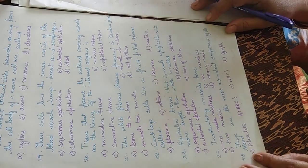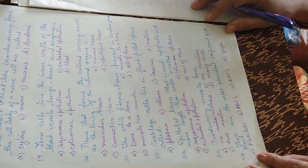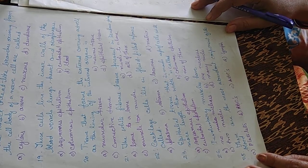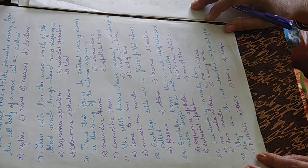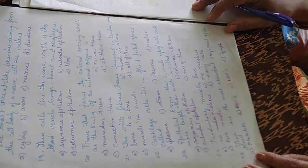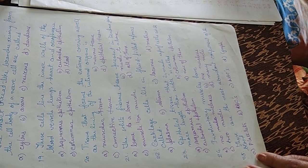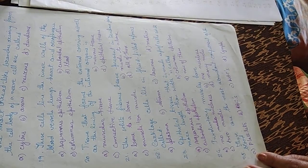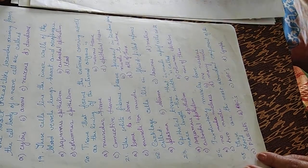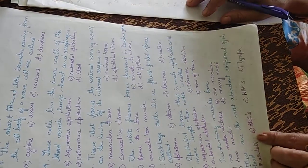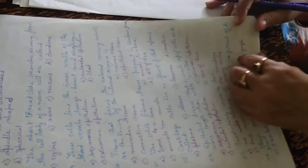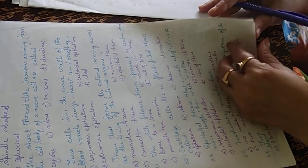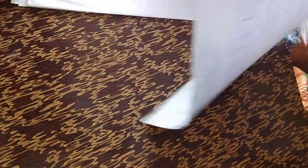Twenty-fifth question: the most abundant component of the blood — options are platelets, RBCs, WBCs, or lymph. The answer is B — RBCs. That is why it gives red color to the blood; RBC stands for red blood cells.